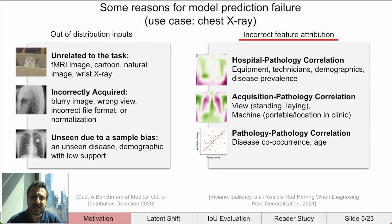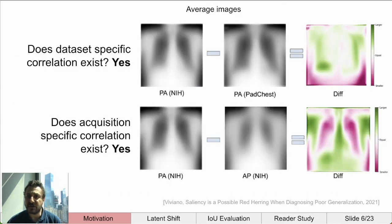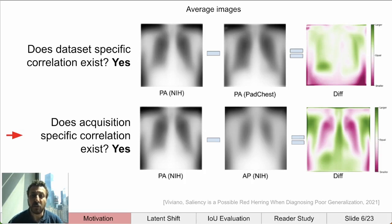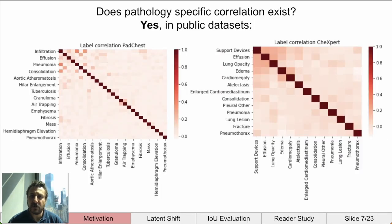We can see examples of dataset-specific correlation by looking at average images from the NIH and the PadChest dataset. Also, within a single dataset, we can see how the acquisition projection can be seen as well. It is very likely that patients who cannot stand up for a PA projection typically have more pathologies present. We also see correlation between labels in public datasets.